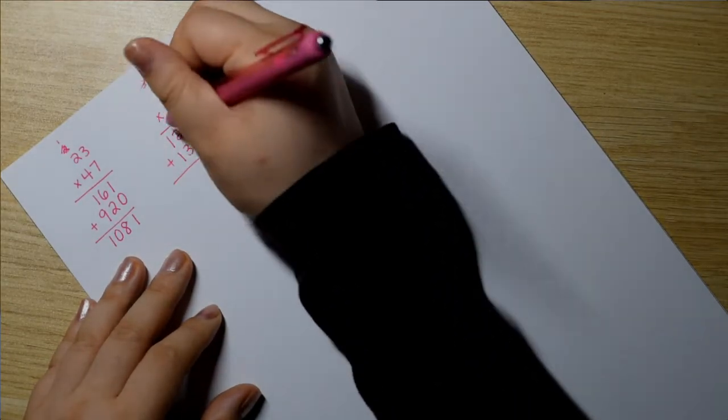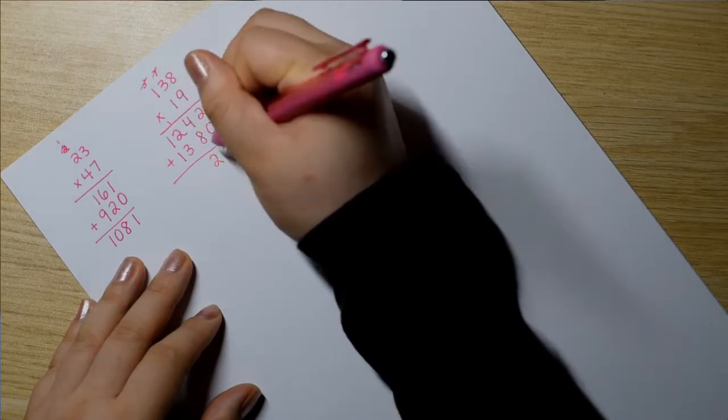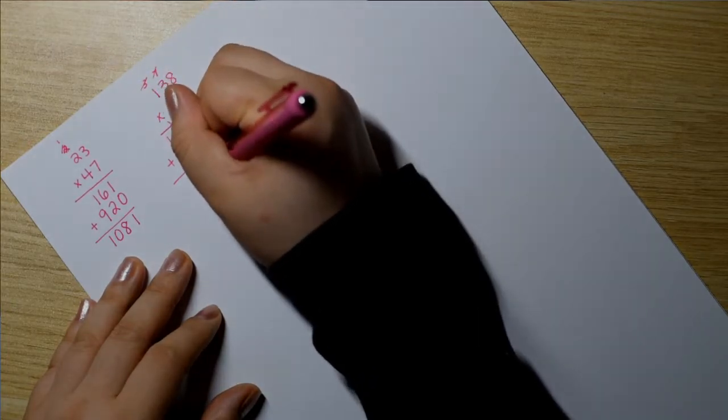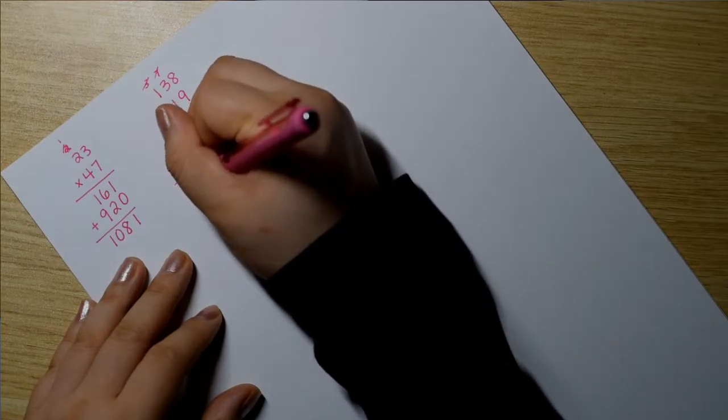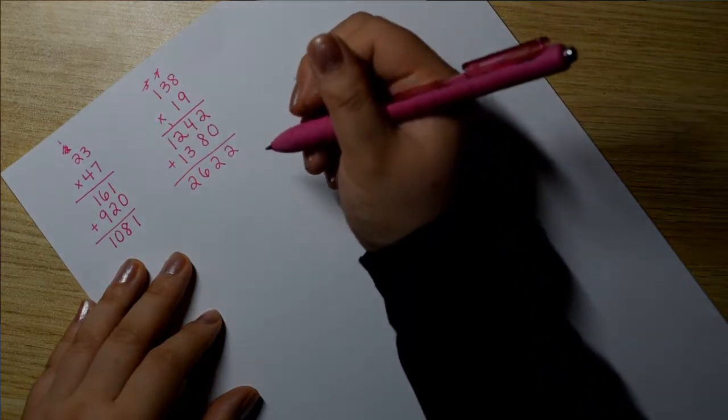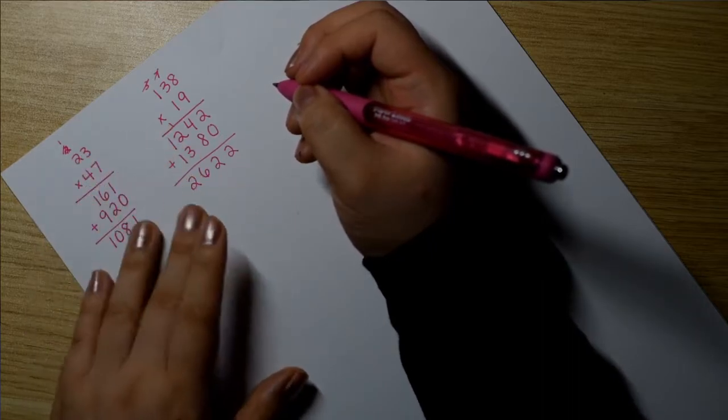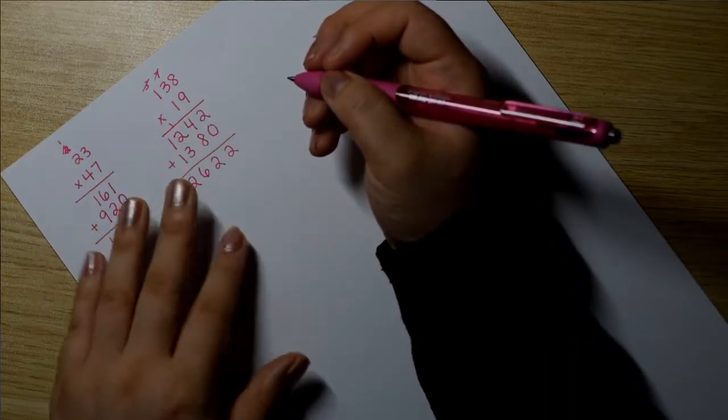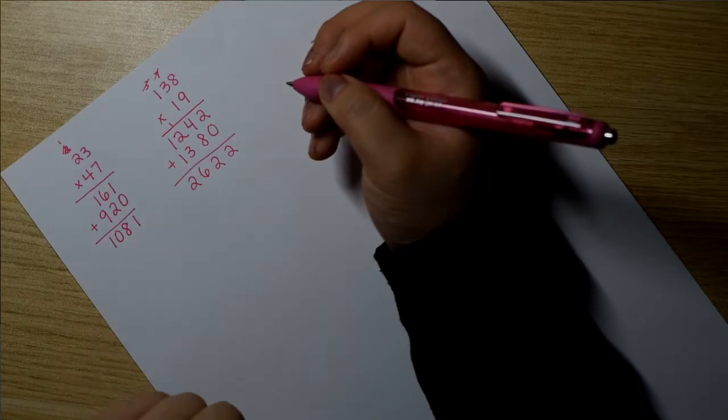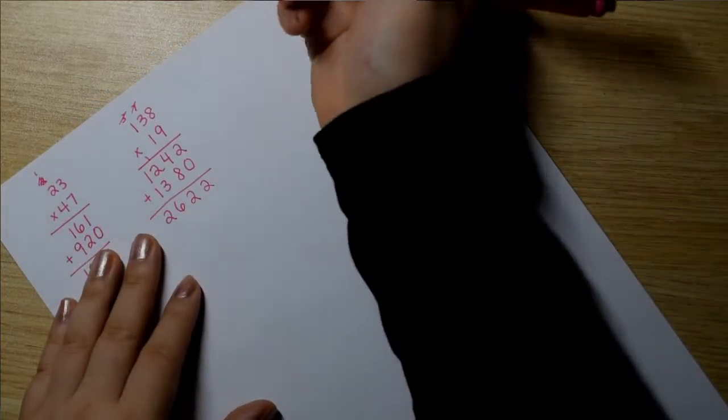2, 4 plus 8 is 12, 1 plus 2 plus 3 is 6, 1 plus 1 is 2. 2,622. Very nice. And it's only been just a couple of minutes. How amazing, right?